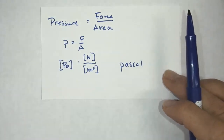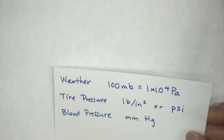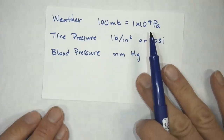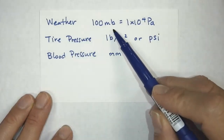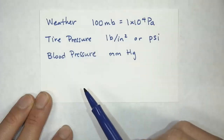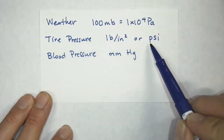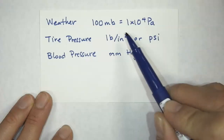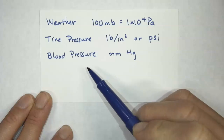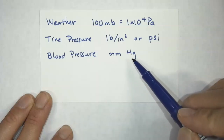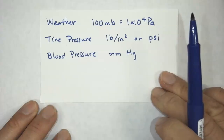When we talk about pressure, let me talk a bit more about when you might see this being used in everyday life. In weather, they use millibars as units. For tire pressures, we use pounds per square inch, or PSI. And for blood pressure, we use millimeters of mercury to measure pressure.